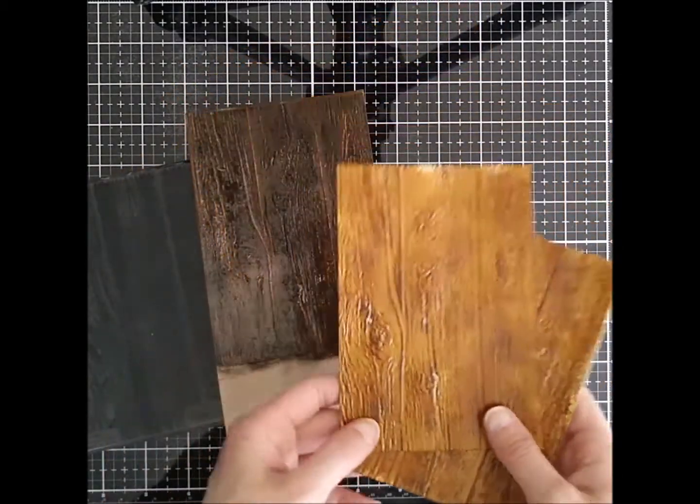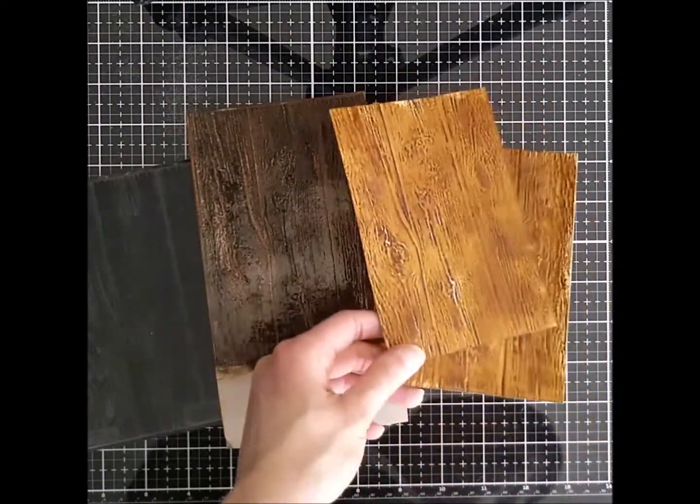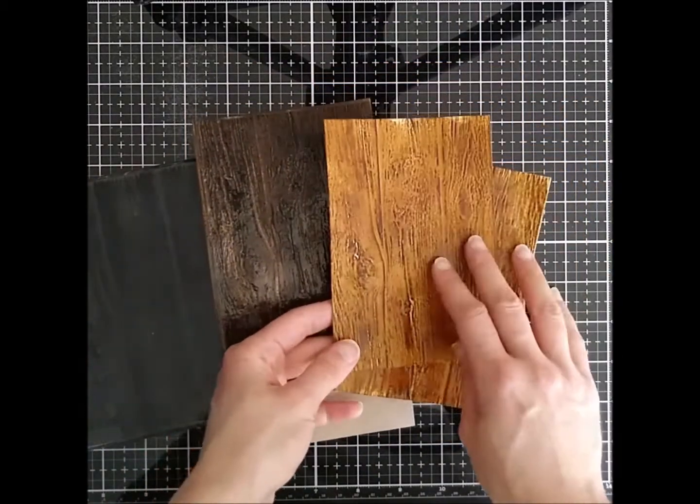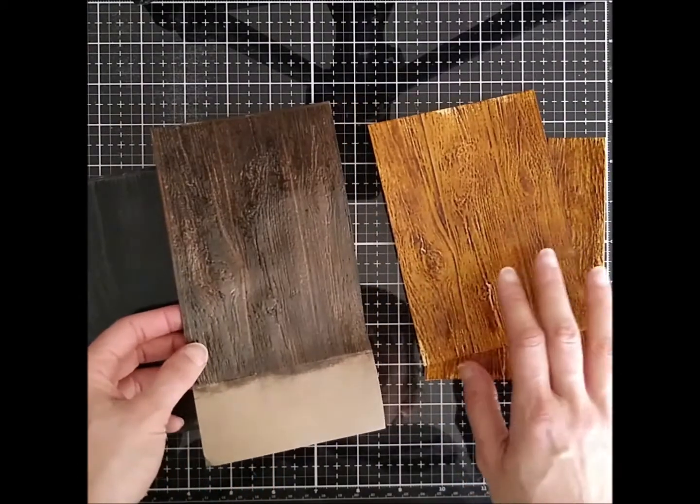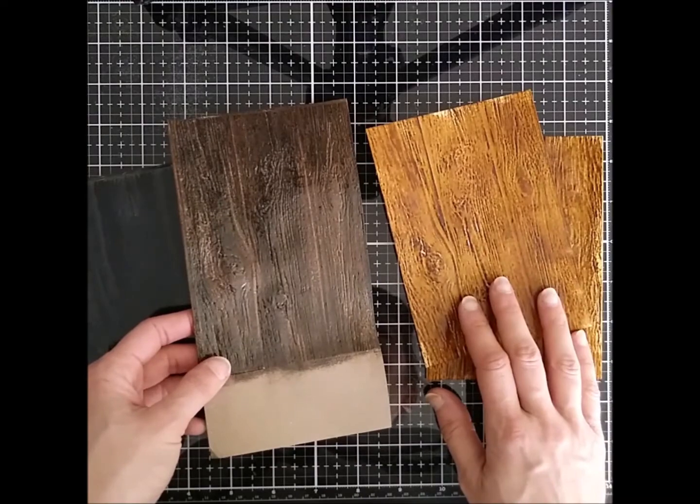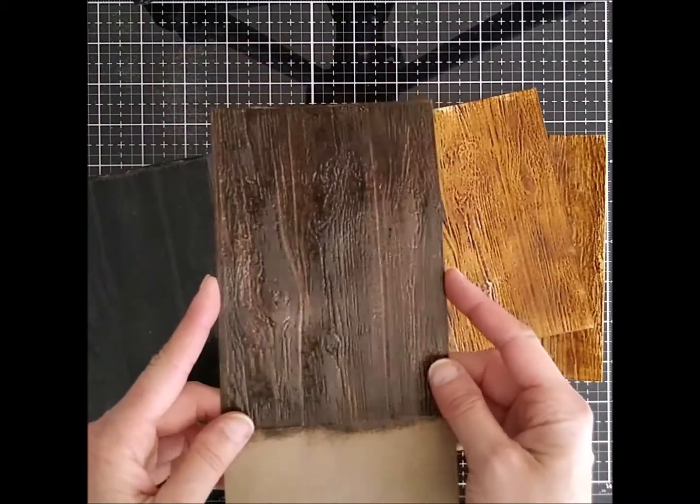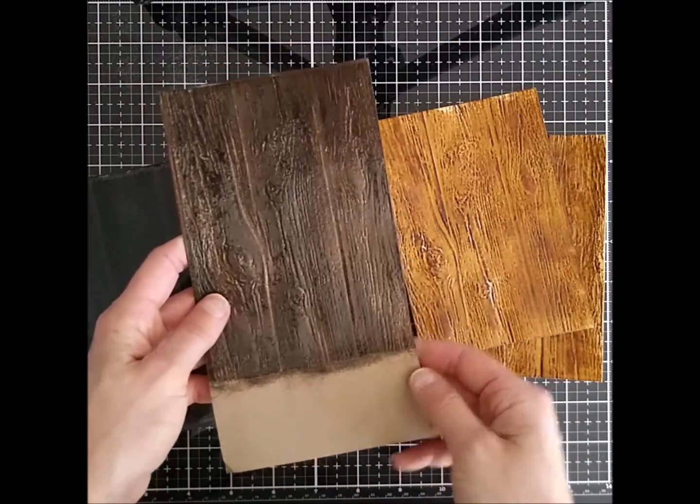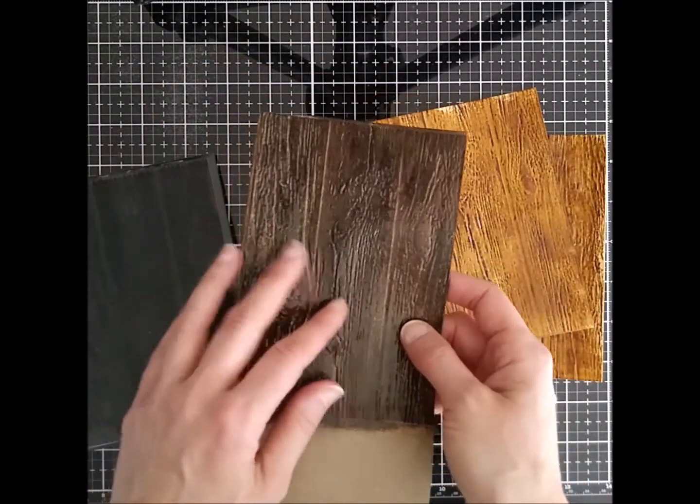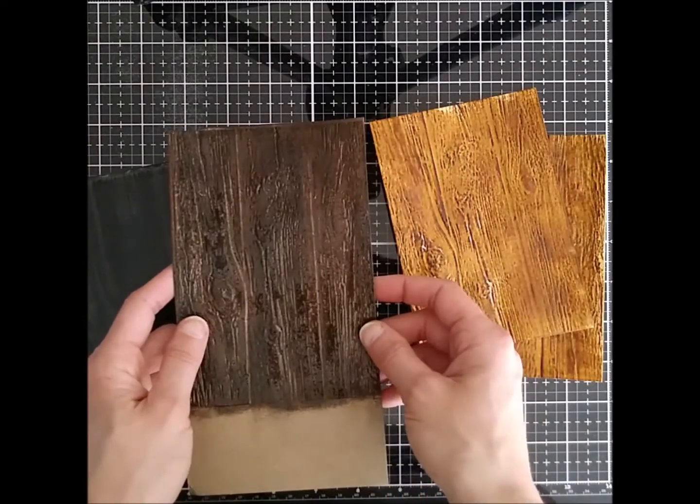The only thing that is different is that I use different colors. So in these ones I started with white card stock and then used the vintage photo distress glaze, and this time I started with craft paper and used walnut stain distress glaze because I wanted it to be darker wood.